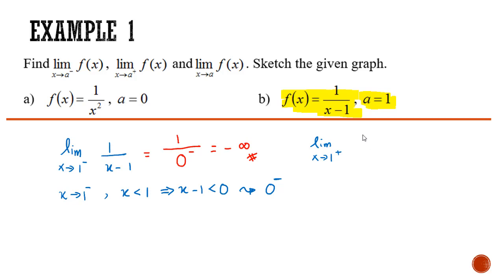When we approach 1 from the right, means that x is greater than 1, the interval will be greater than 0, which is the denominator is 0 plus with the ratio positive infinity.